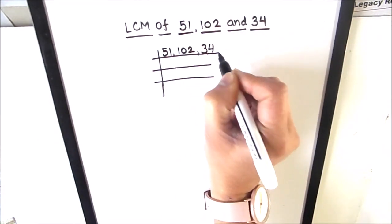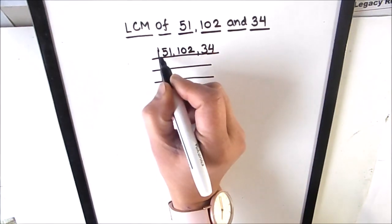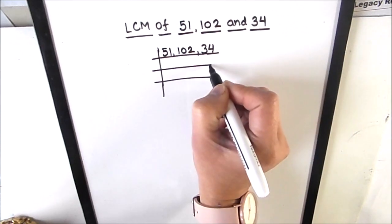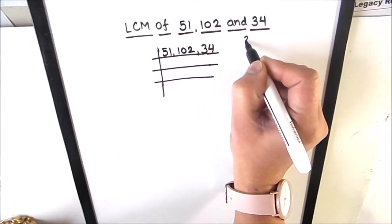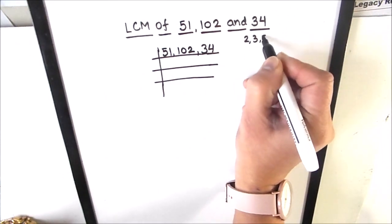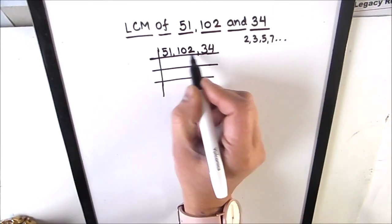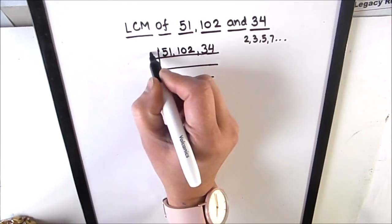So first we will write three numbers together in a single letter and we'll divide the numbers. First few prime numbers are 2, 3, 5, 7, and so on.